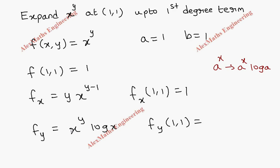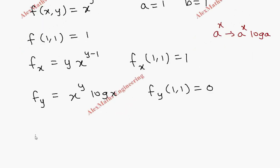will be, this is 1 and log 1 is 0, so totally this is 0. Now we are going to write the Taylor series expansion up to 1 degree. So f(x,y) is f(a,b)